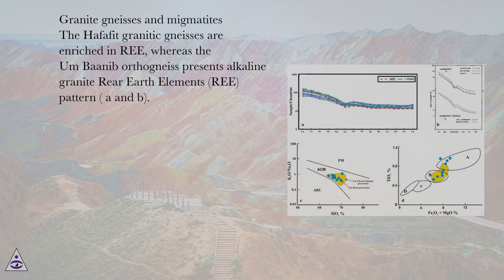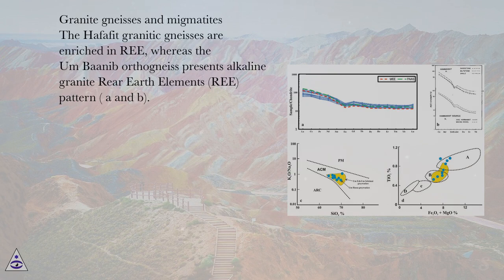Granite gneisses and magmatites. The Hafafit granitic gneisses are enriched in REE, whereas the Umbanib gneiss presents alkaline granite rare earth element (REE) patterns A and B.